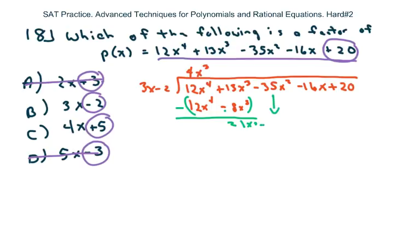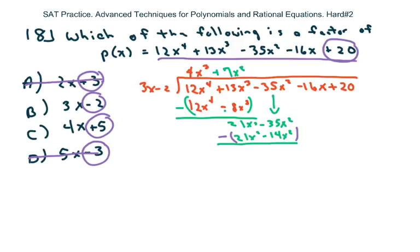Bring down the next term and repeat. What term times 3x gives you 21x³? That's 7x². Multiply to get 21x² - 14x². Subtract — the first term goes away. With the two negatives, this becomes negative 21x². Bring down your -16x.